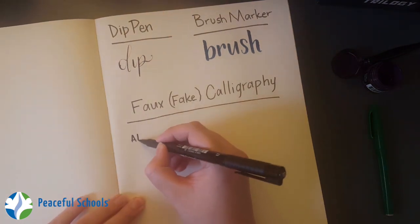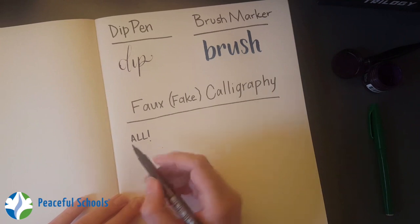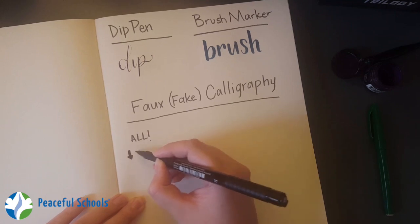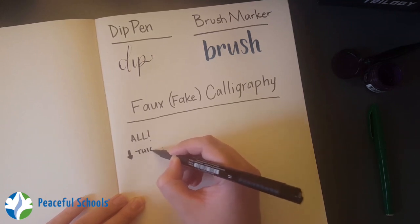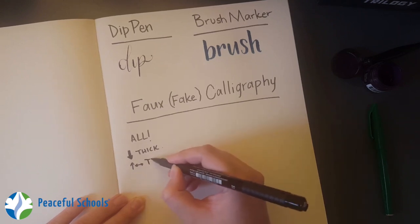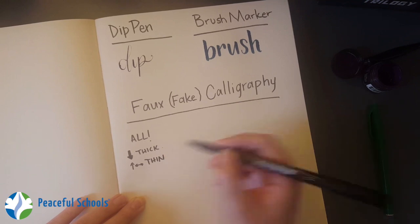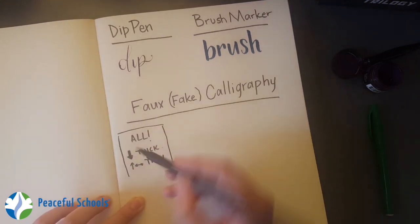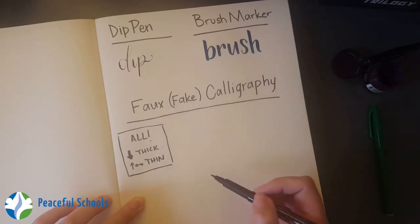Now this type of lettering is going to follow the same rules as all the others. So for all of them, they're all going to, when your pen moves down the paper, you have thick lines. When your pen moves up or across the paper, you have thin lines. So again, this is for every type of this kind of calligraphy.